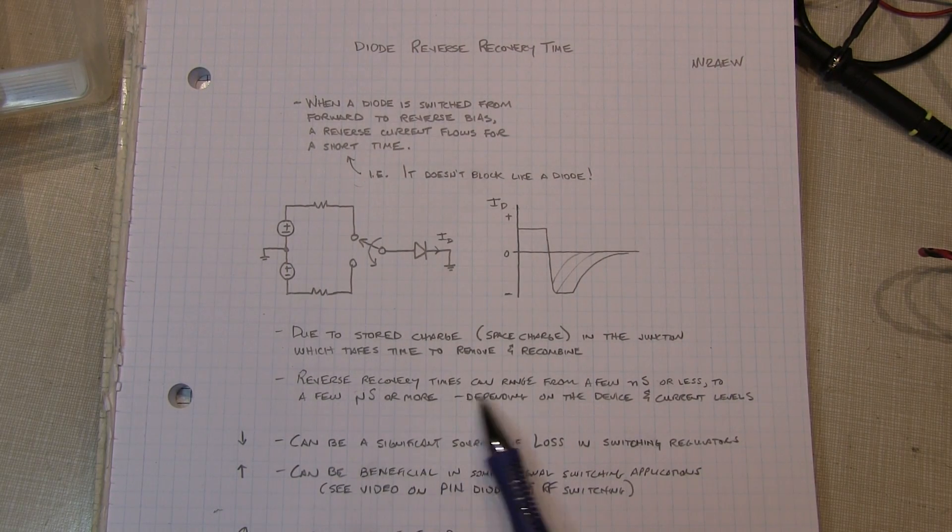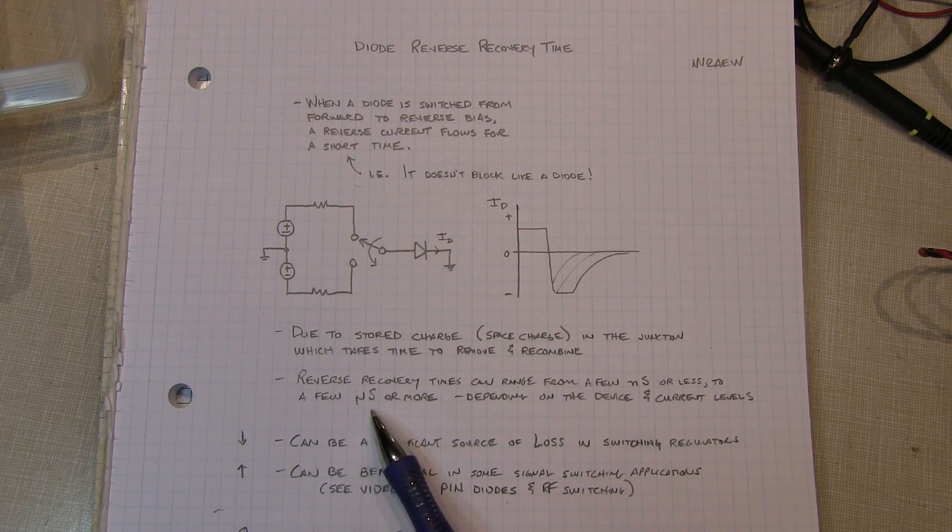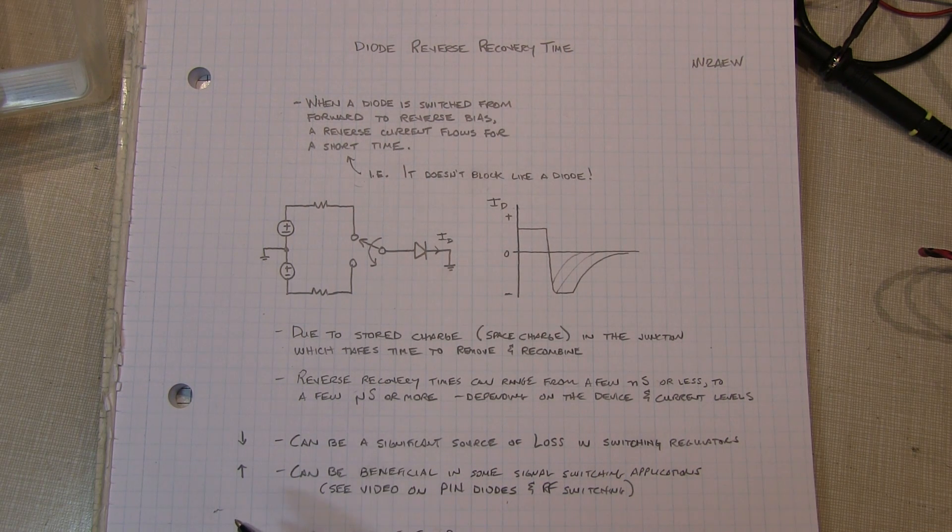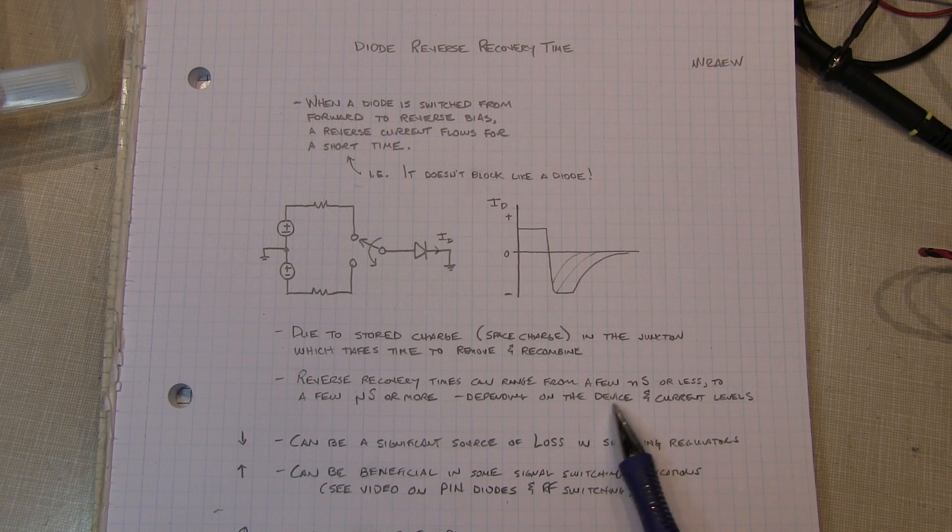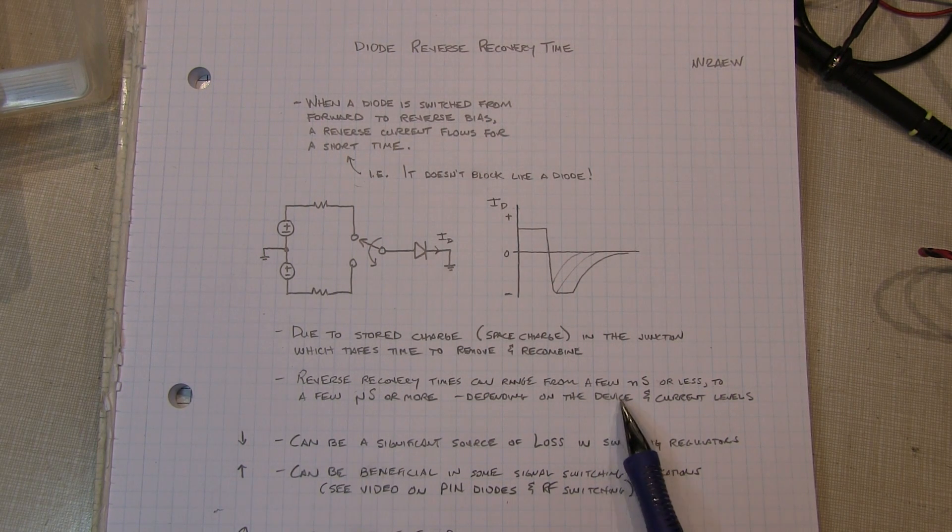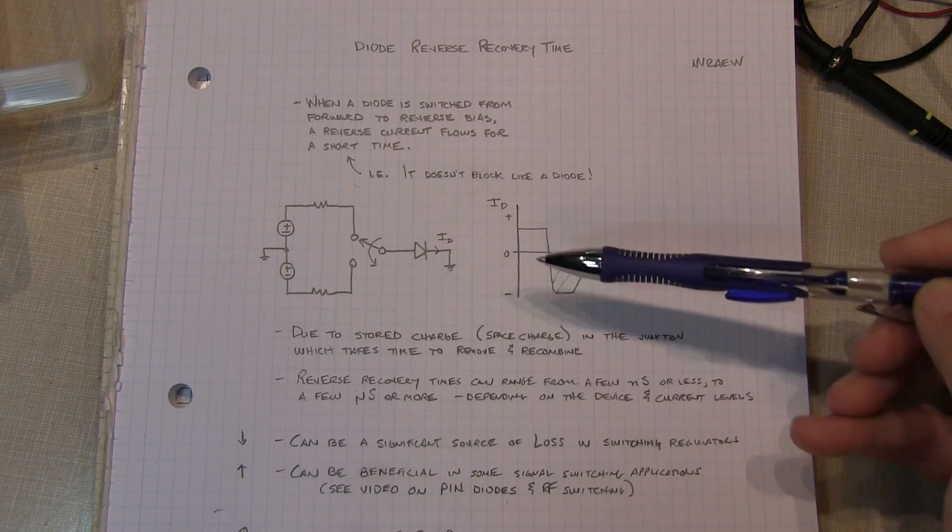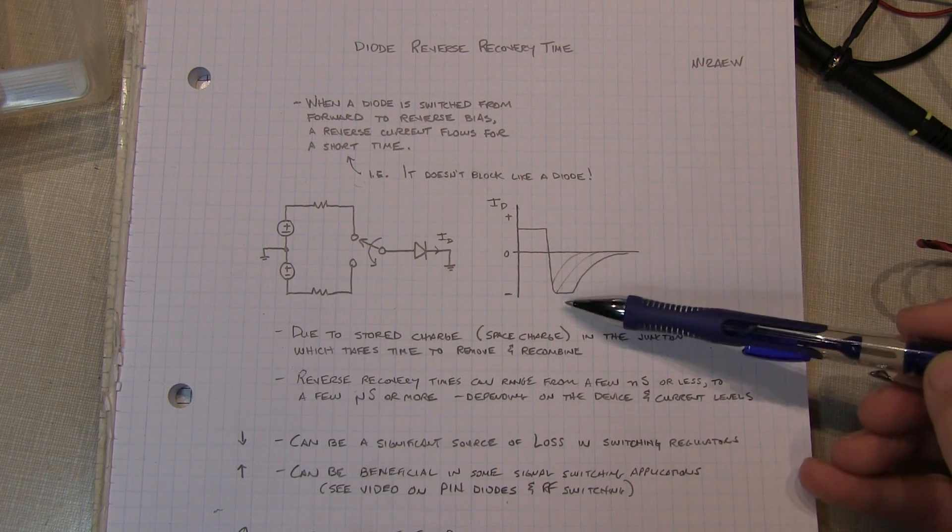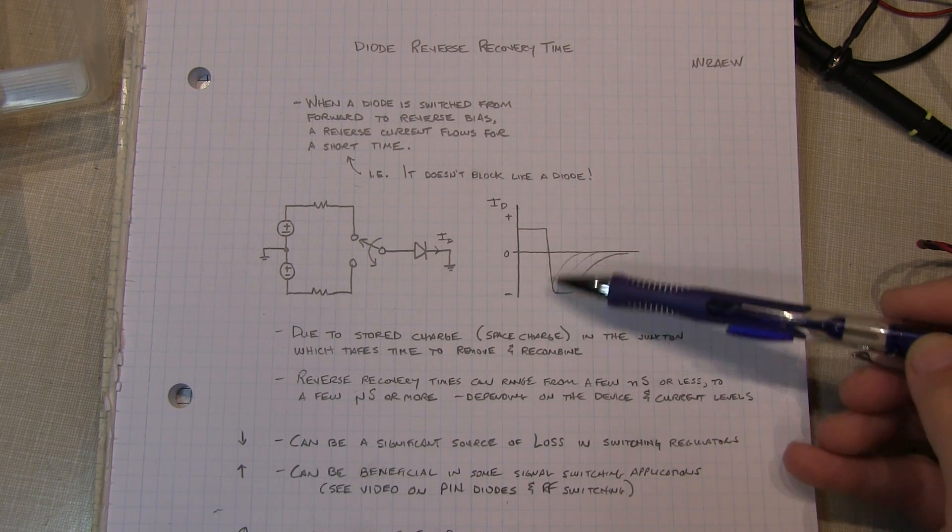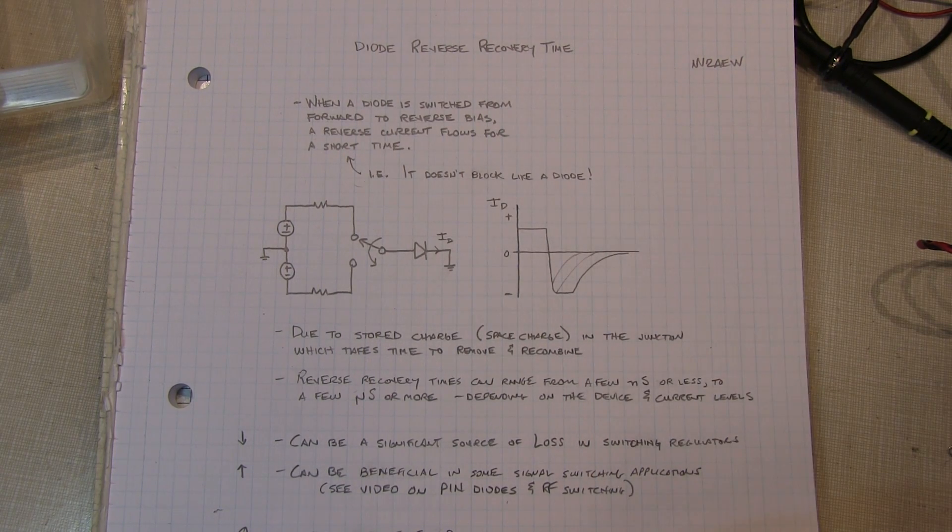The reverse recovery time can range from a few nanoseconds or less for high-speed switching diodes to a few microseconds or more for high-power rectifiers or even pin diodes. So the reverse recovery time is going to depend very highly on the particular device and what its application was designed for as well as the current levels that are involved. For a given device, if we operate at a higher forward current, the reverse recovery time will be longer because there's more space charge that has to be removed.